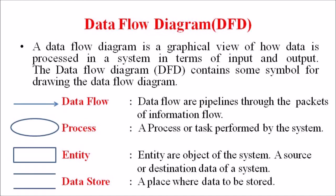A data store is a place where data is to be stored, which is represented by two parallel lines. So to summarize, we use four independent symbols: data flow by arrow, process by ellipse, entity by rectangle, and data store by two parallel lines.